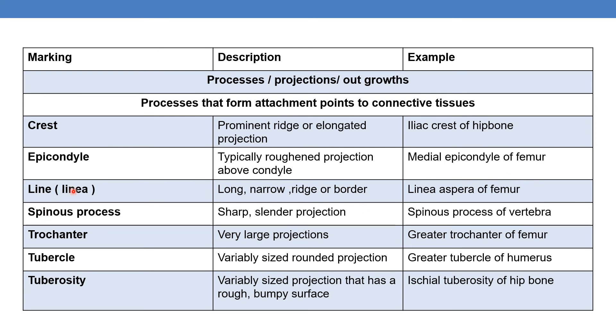Next is linea — a long, narrow ridge or border. An example is the linea aspera of the femur.